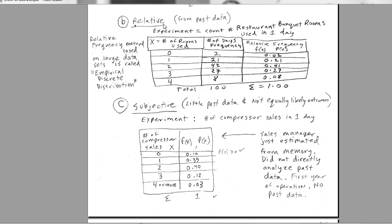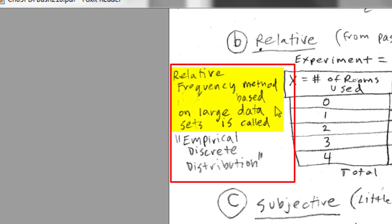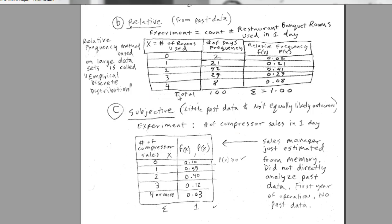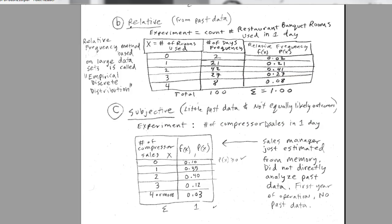Now, relative method or relative frequency method, we go from past data. And we'll actually create this frequency distribution from scratch later in this video. But our experiment is count the number of restaurant banquet rooms used in one day. There are four banquet rooms, so the possibilities are 0 all the way to 4. We did a sample over the last year and got these frequencies. We calculated these relative frequencies. They add up to 1. Each individual one is greater than 0, so we have our relative frequency distribution. We can use these as probabilities. Now, relative frequency method, when large data sets are used, is called an empirical discrete probability distribution. Now, we can use this to make predictions. The probability that we're going to use two rooms, 0.41. Probability that we're going to use two or three, 69%.